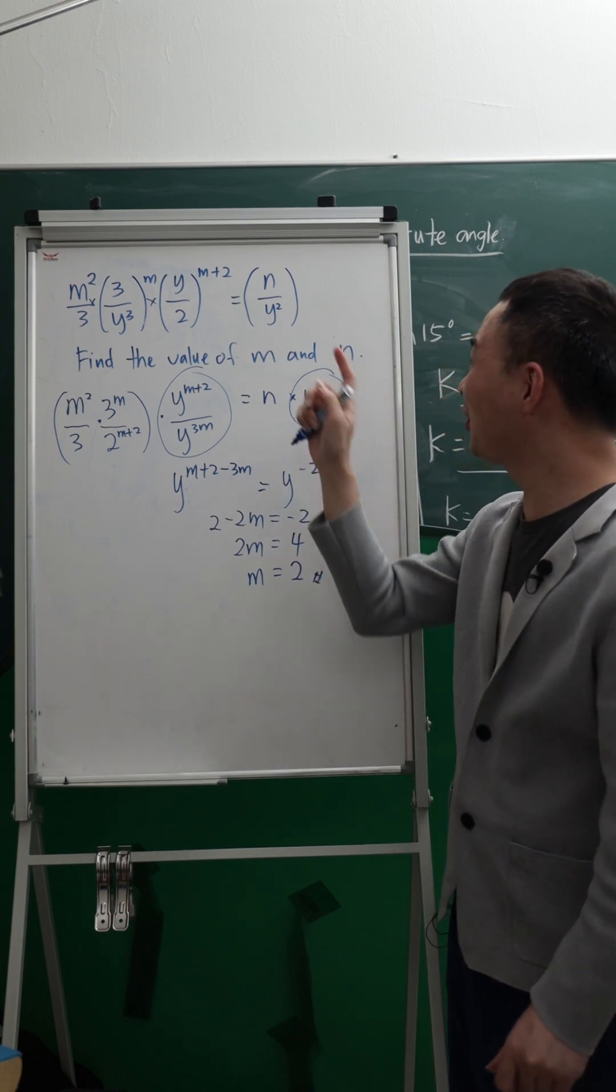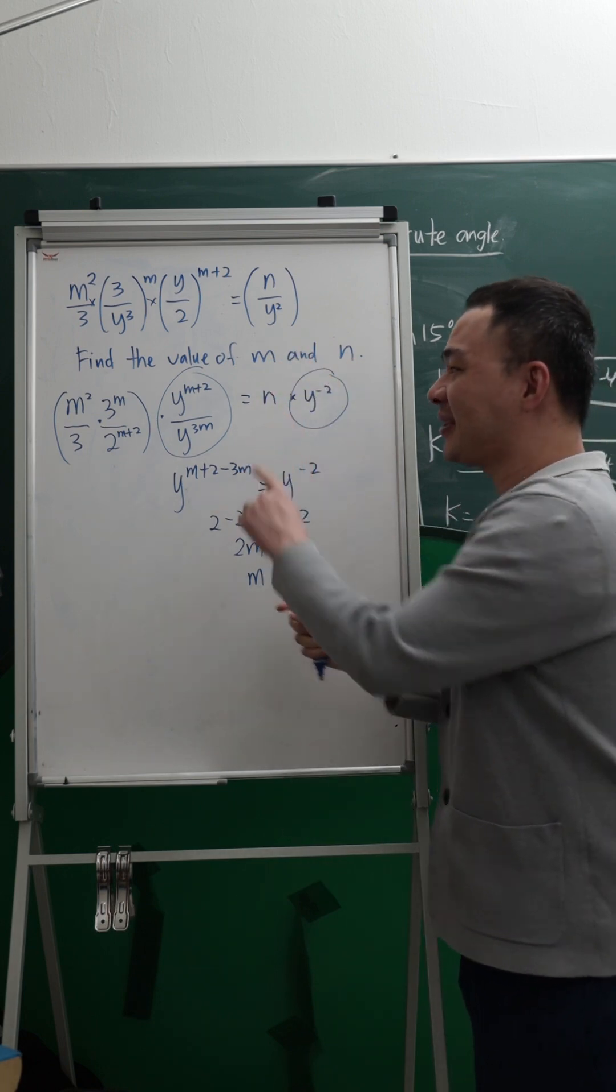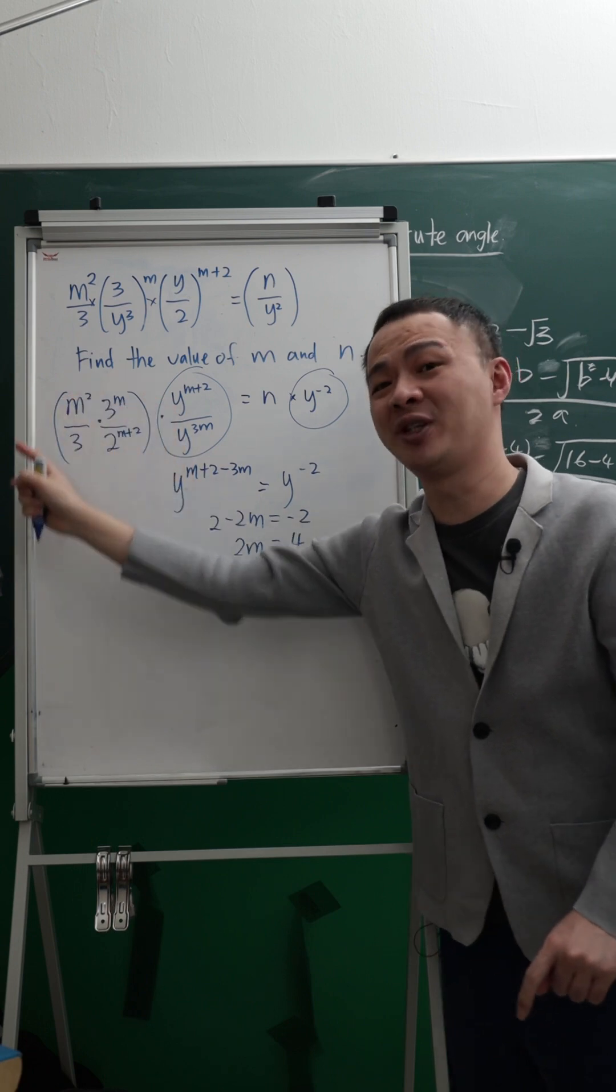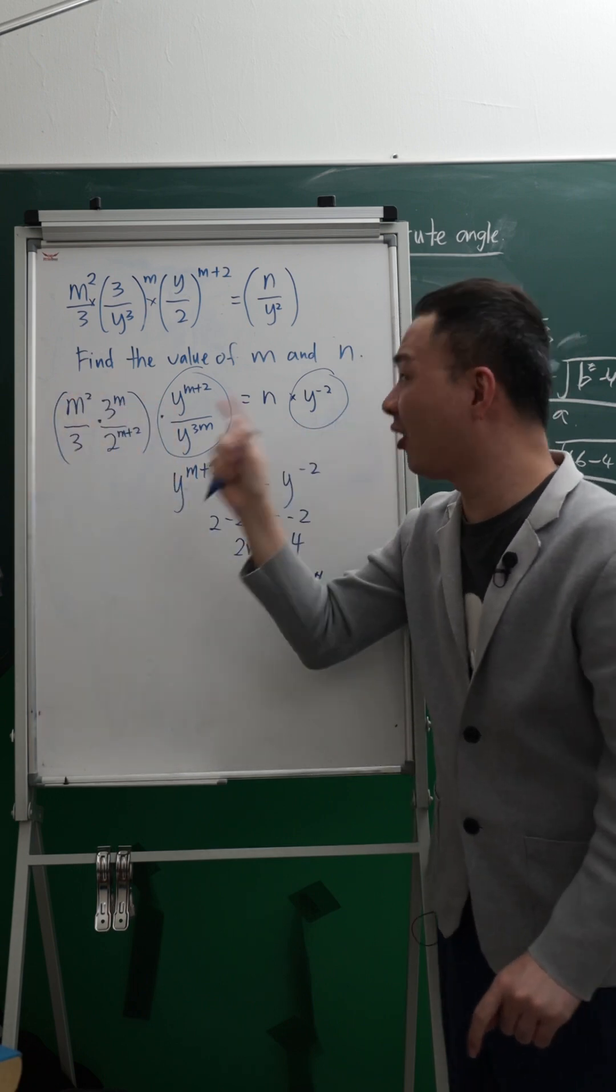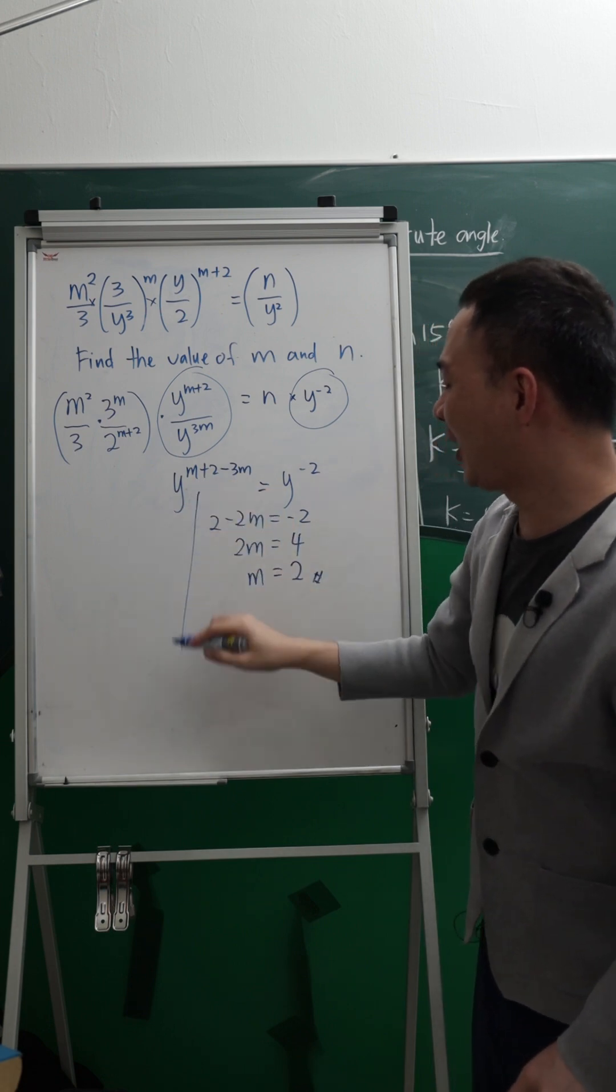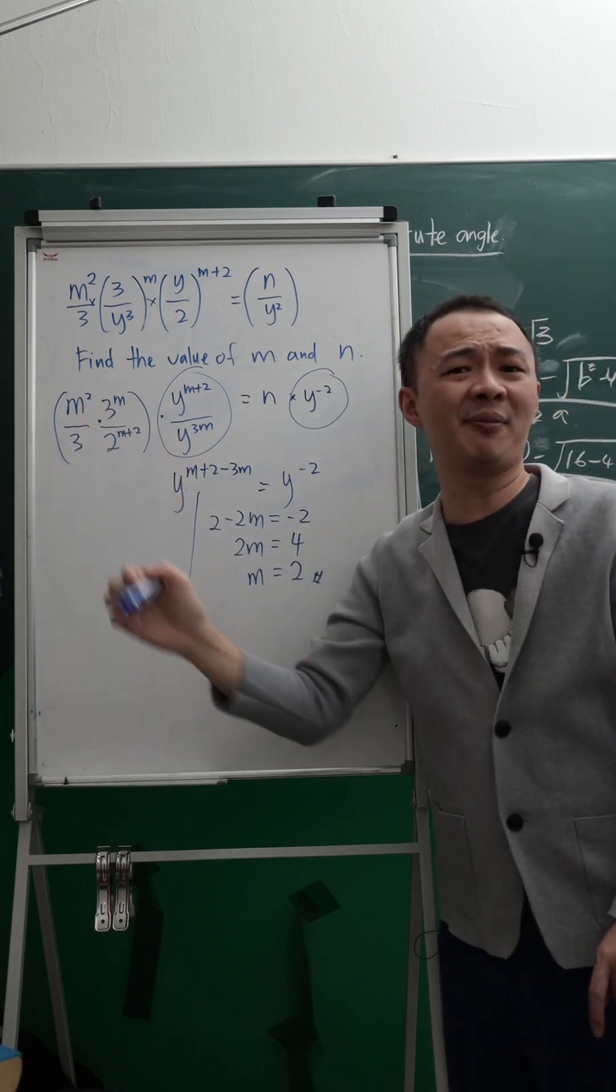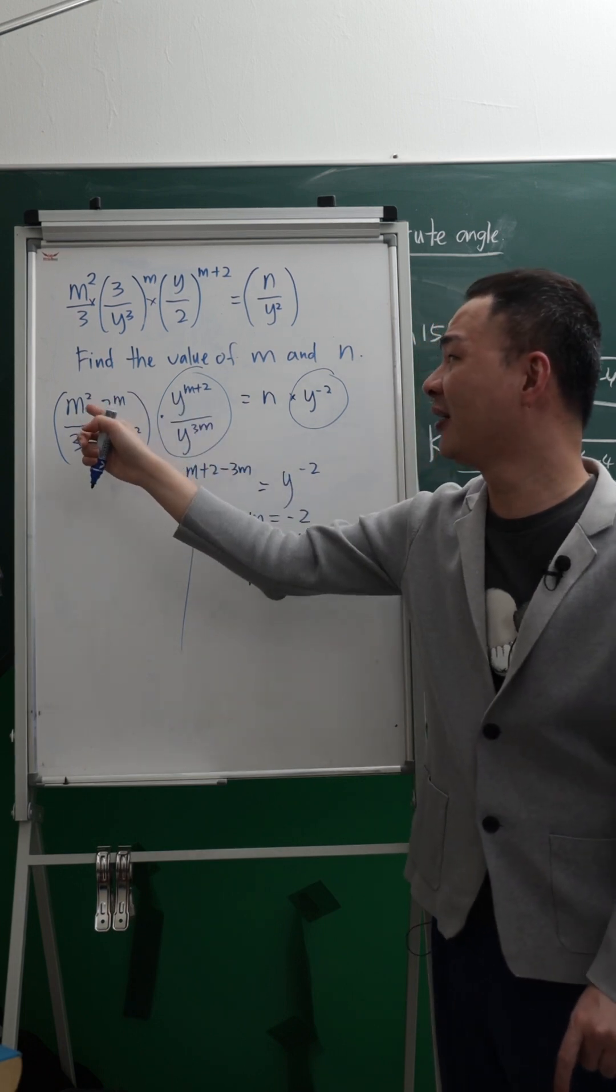But we haven't found N yet because we still need to find the N. So I know N basically are the term with no Y, which is not Y. So over here, you can see, this is what I will do: this M is 2. I will straight away plug my 2 into the M here.